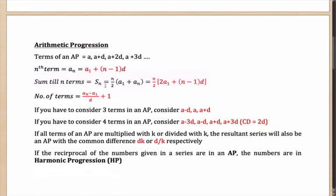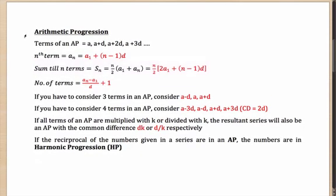First, we need to understand what exactly is an arithmetic progression. An AP is a series which follows a particular property: the terms have the same common difference. For example, 1, 2, 3, 4, 5, 6 is an AP where the common difference is 1. Similarly, 1, 3, 5, 7, 9 is also an AP where the common difference is 2.